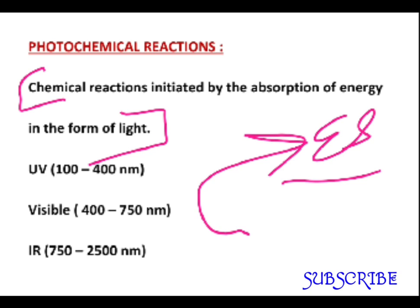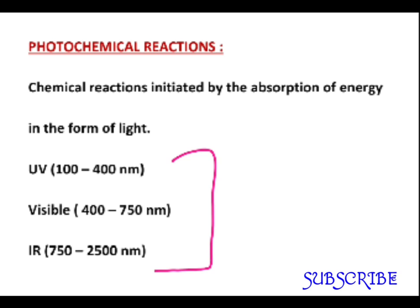If you want to find out which is the range for absorption or the photochemical reaction to work out, a chemical reaction caused by absorption of ultraviolet radiations has wavelength ranging from 100 to 400 nanometers, visible radiations from 400 to 750 nanometers, and infrared radiations from 750 to 2500 nanometers. When such absorption of radiations initiates a chemical reaction, that is called a photochemical reaction.